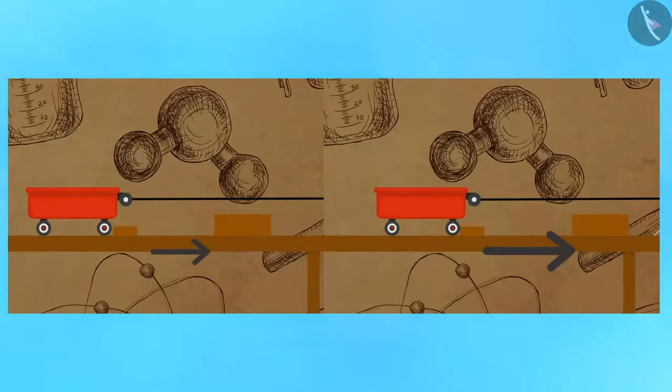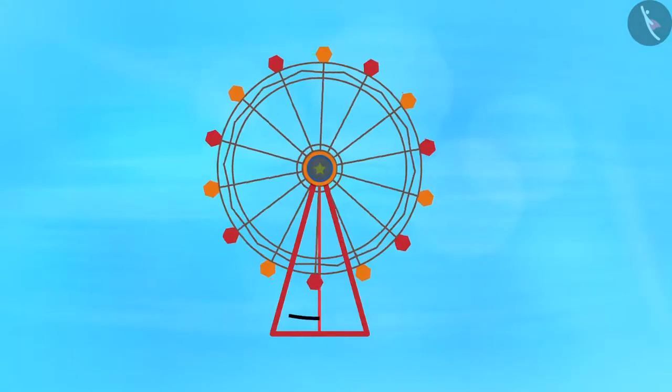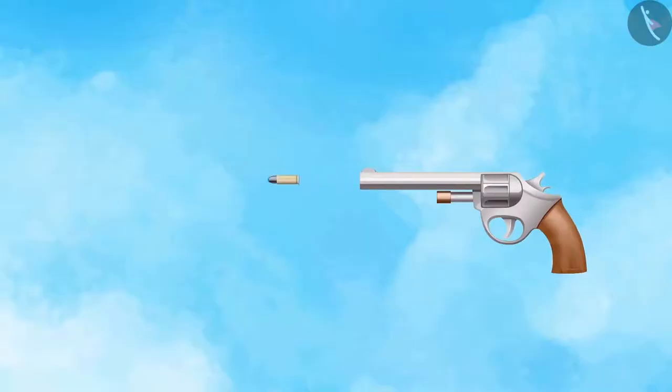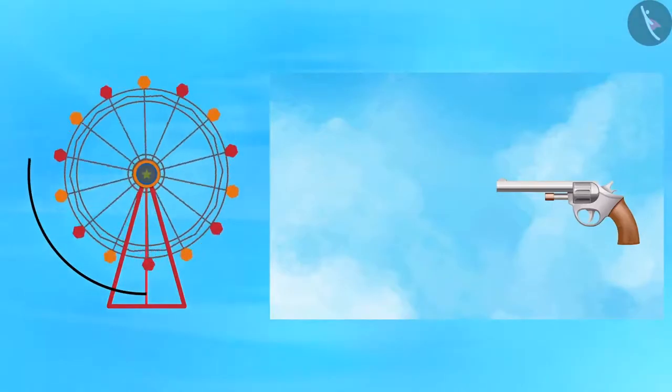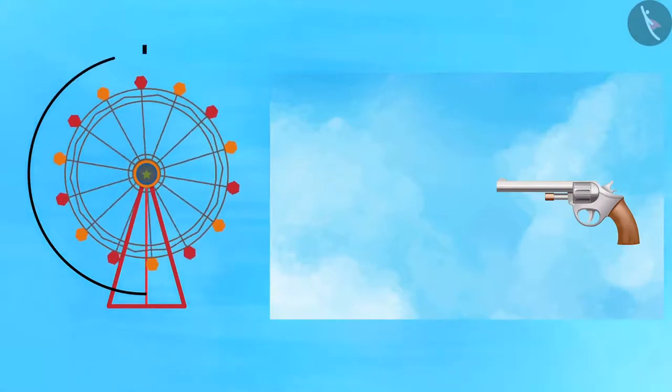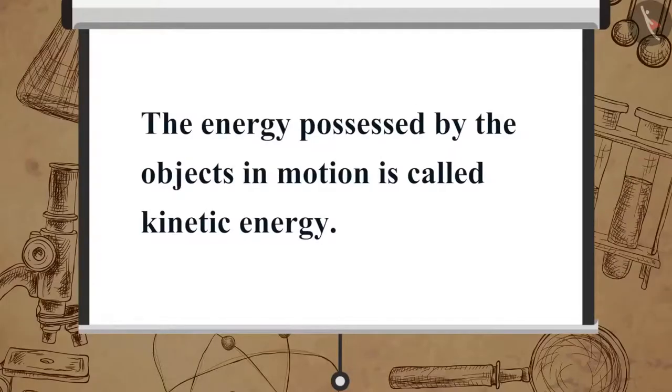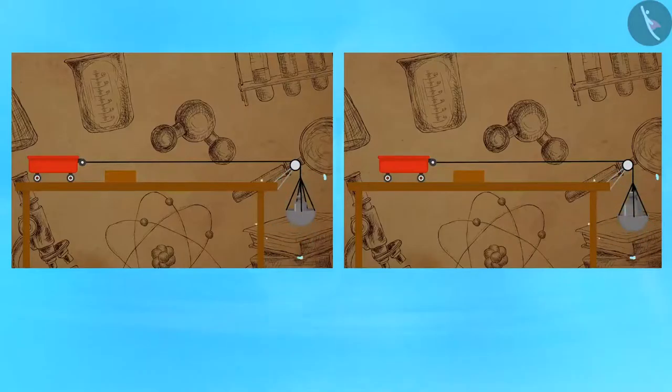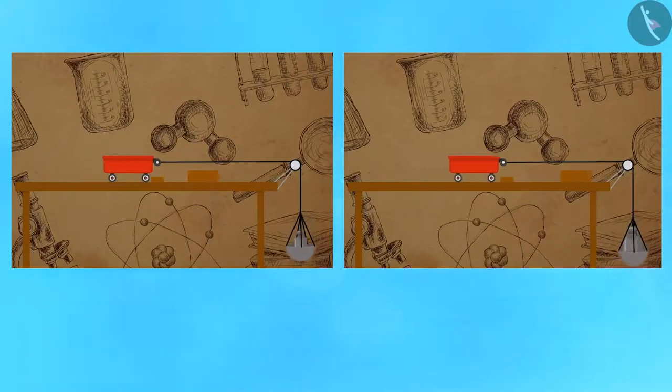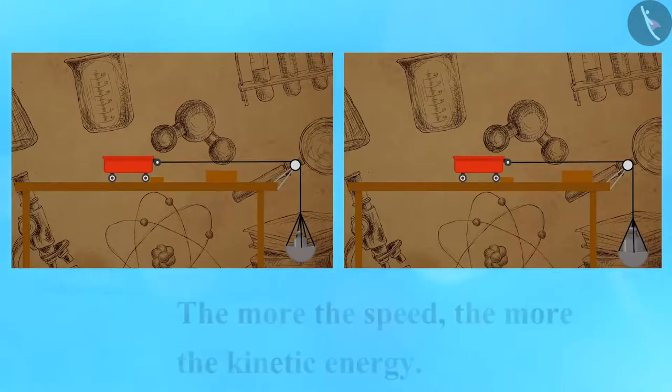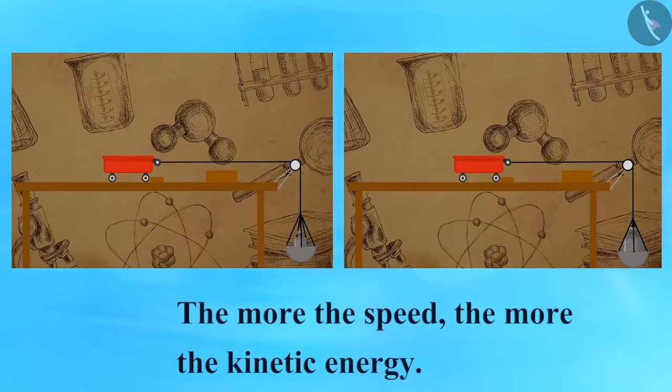A fast-moving object does more work than a relatively slow-moving object. Think of the rotating wheel or the bullet fired from a gun, both of which possess energy to do work. The energy possessed by the objects in motion is called kinetic energy. Therefore kinetic energy can be defined as the energy possessed by an object by virtue of its motion. The more the speed, the more the kinetic energy.